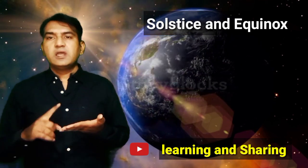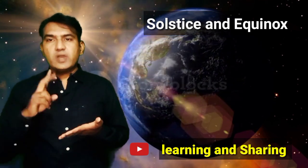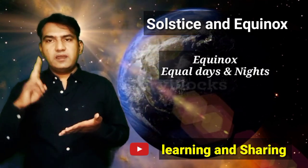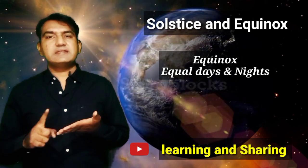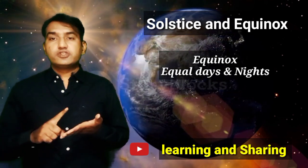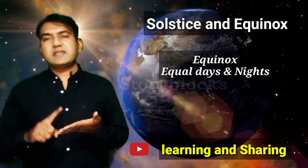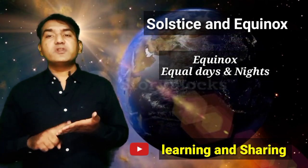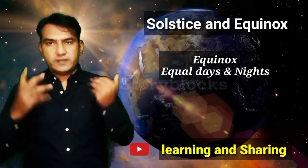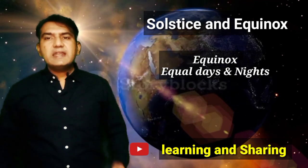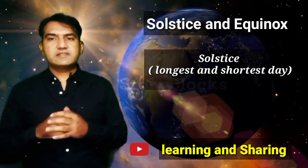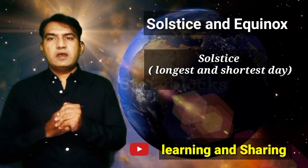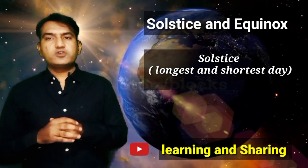So this is called the equinox. Equinox happens twice a year — in two months: one is March and another is September. Specifically 20th March and 23rd September. We have another phenomenon which is called solstice.